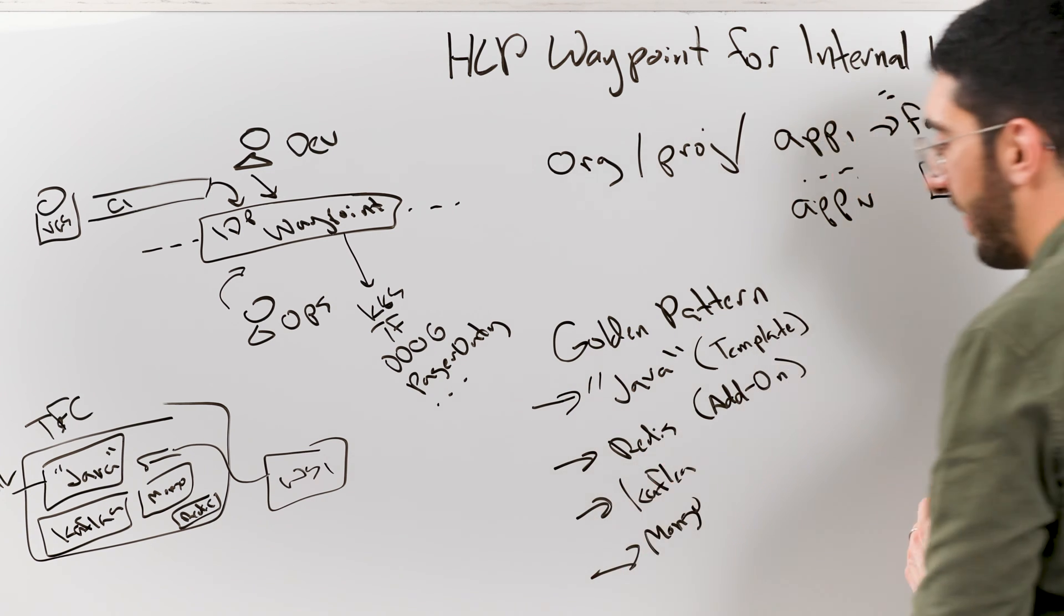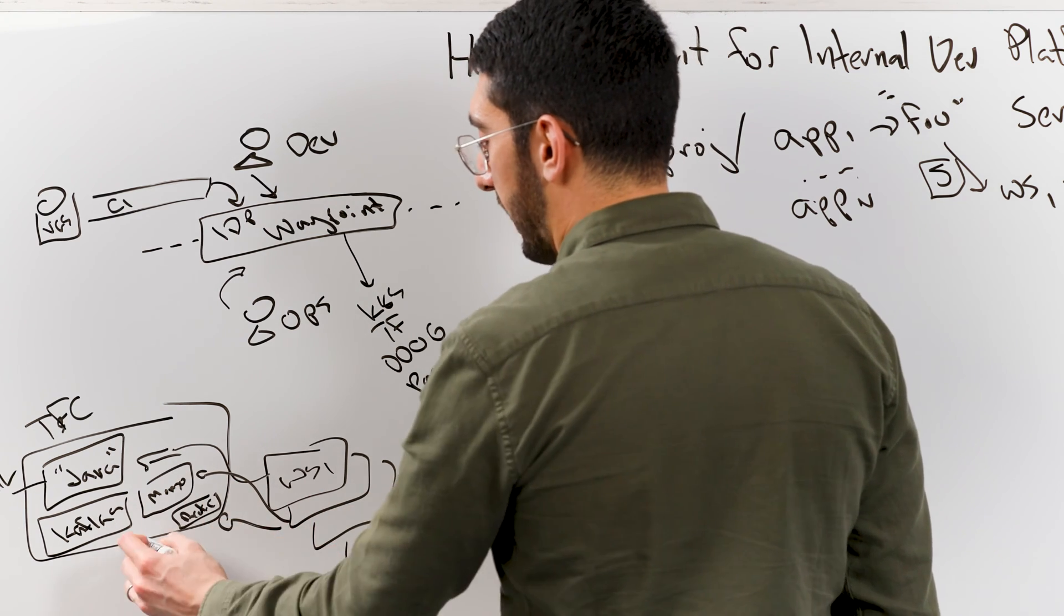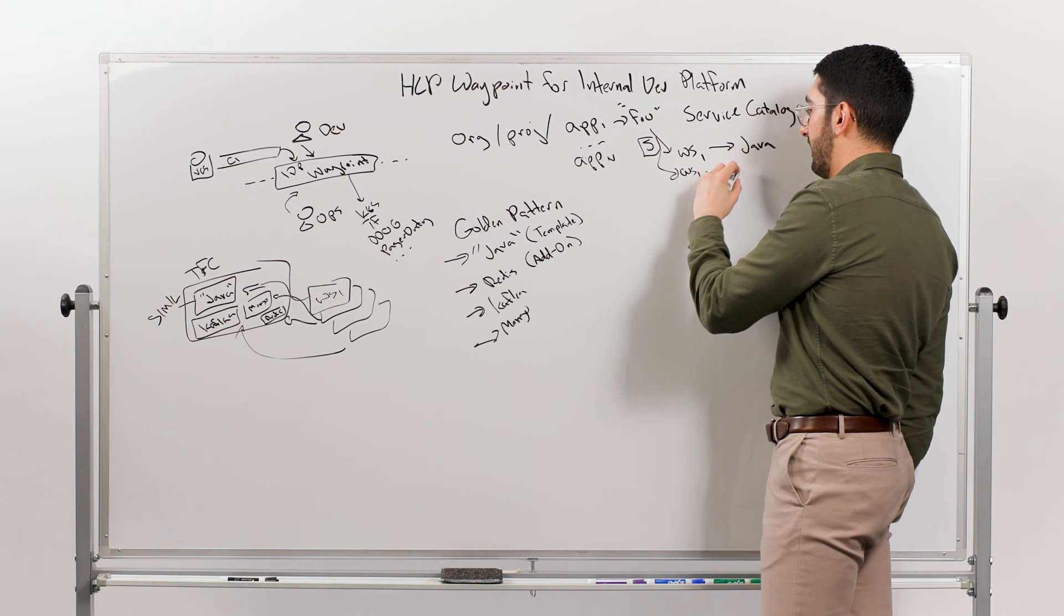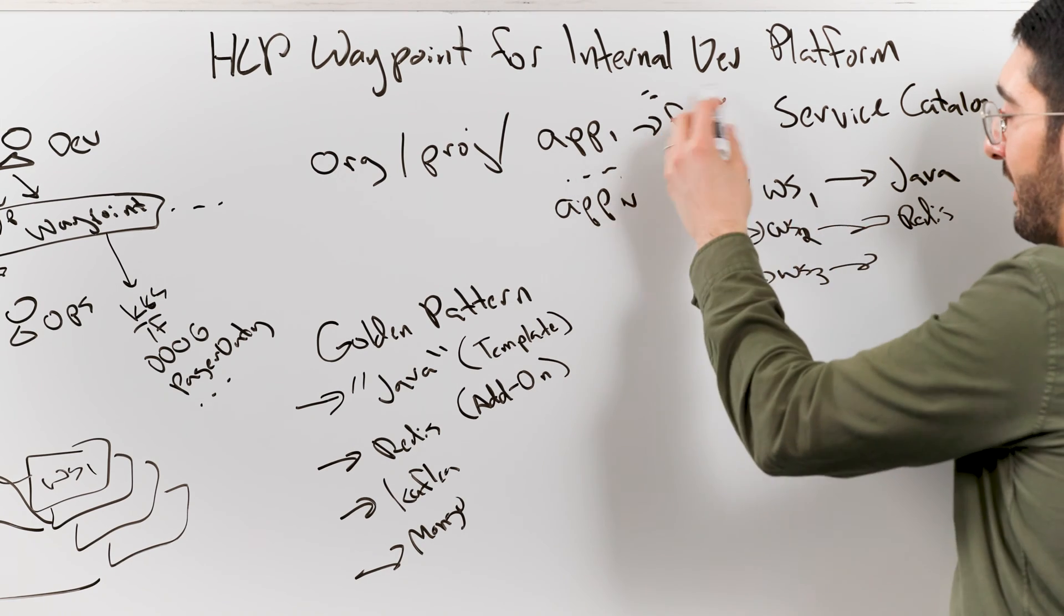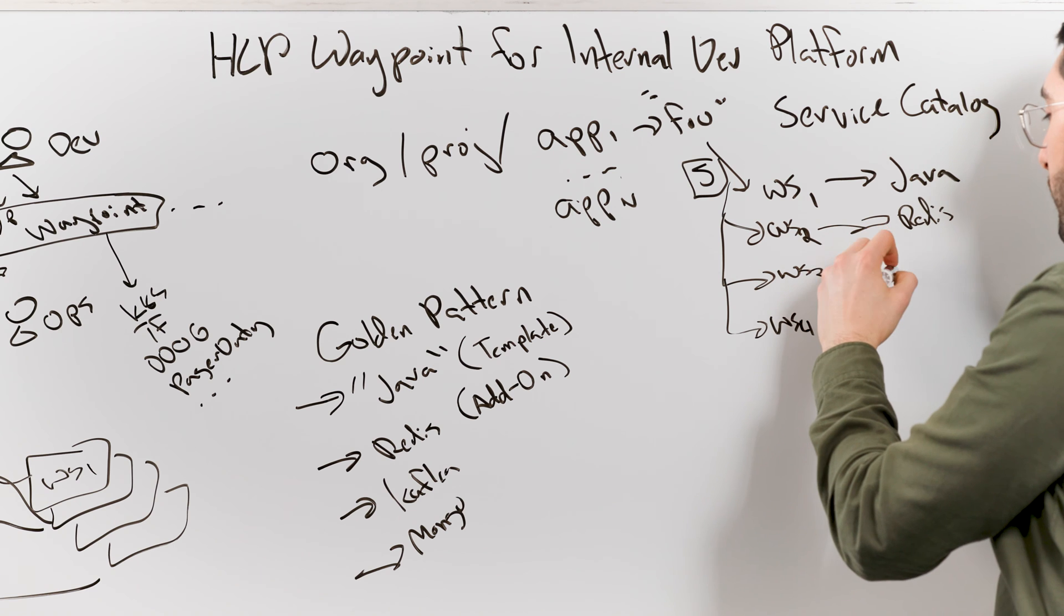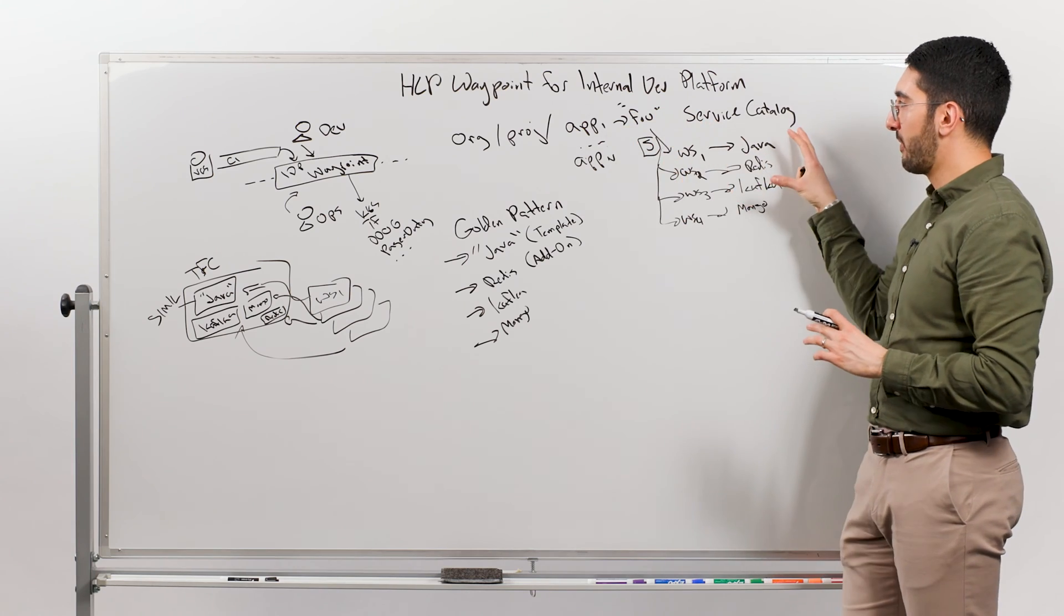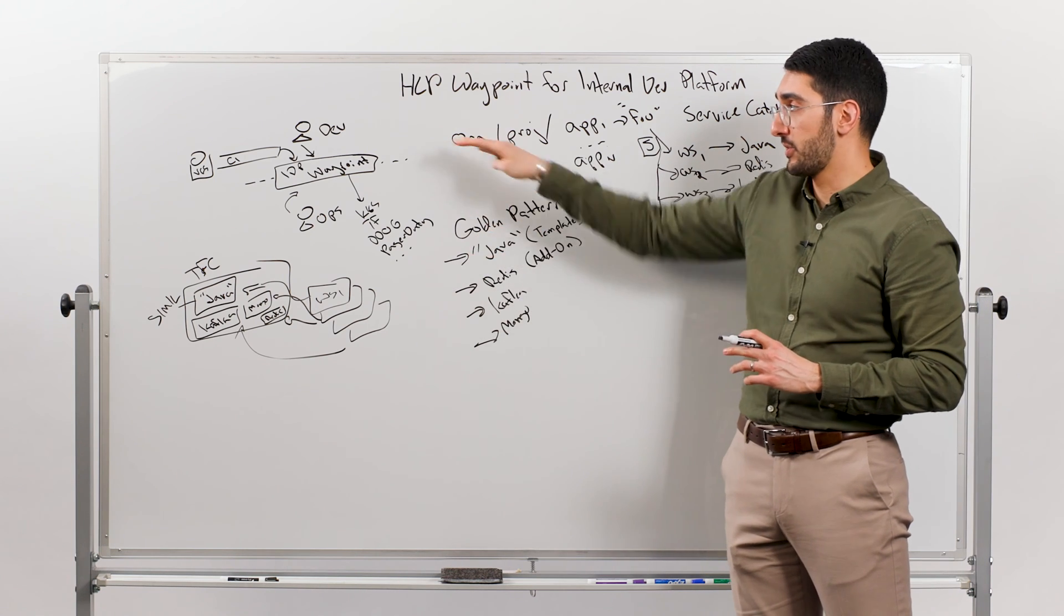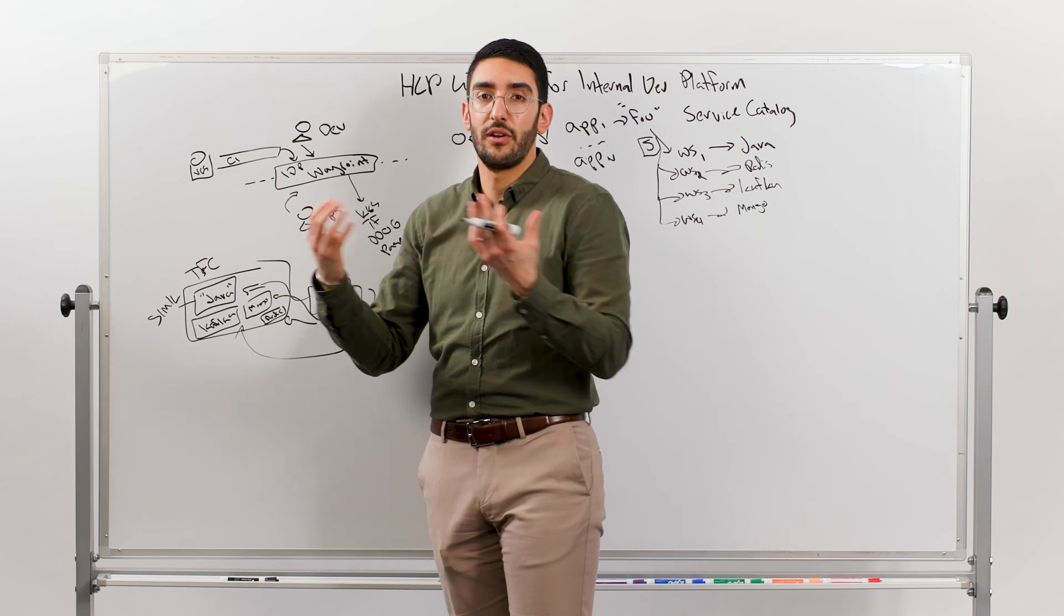When the developer specifies that, they don't need to know how this works. What Waypoint will do is instantiate the additional workspaces linked with the right variables to basically import and create all of the sub pieces of infrastructure that are needed. All that gets linked to the application. I can have visibility - if I click into foo to see what are all the resources associated with this application, I can trace that through to what are the sub Terraform workspaces and underlying resources being spun up in support of this application.